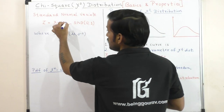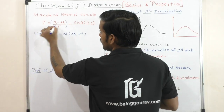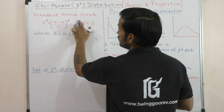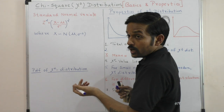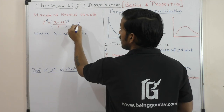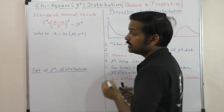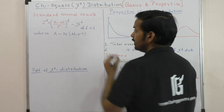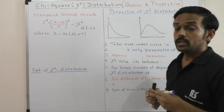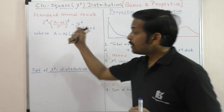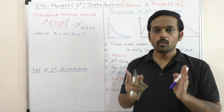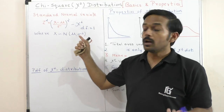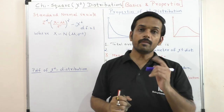So what is chi-square distribution? It is simple. When I take this standard normal variate and square it, what do I get? Chi-square distribution — with one degree of freedom. So whatever our standard normal variate is, you square it, and you get the chi-square variate with degree of freedom equal to 1.